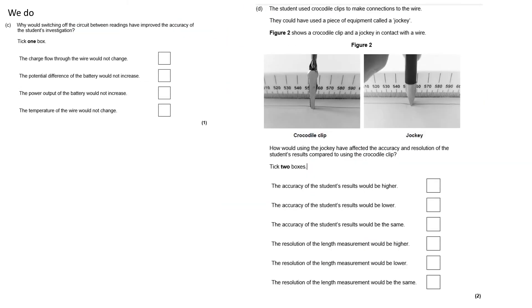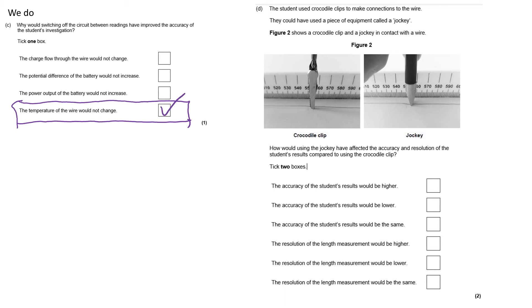The next question asks: why would switching off the circuit between readings improve accuracy? The answer is that switching off allows the wire to cool down, so the temperature of the wire doesn't change between readings. Since temperature is a control variable in this investigation, keeping it constant improves accuracy.